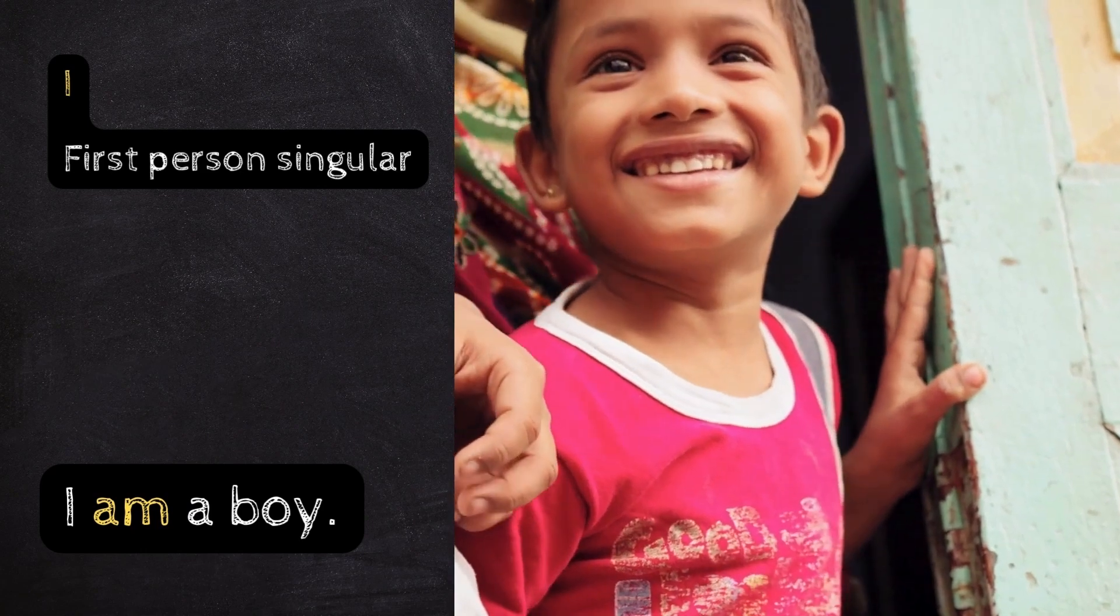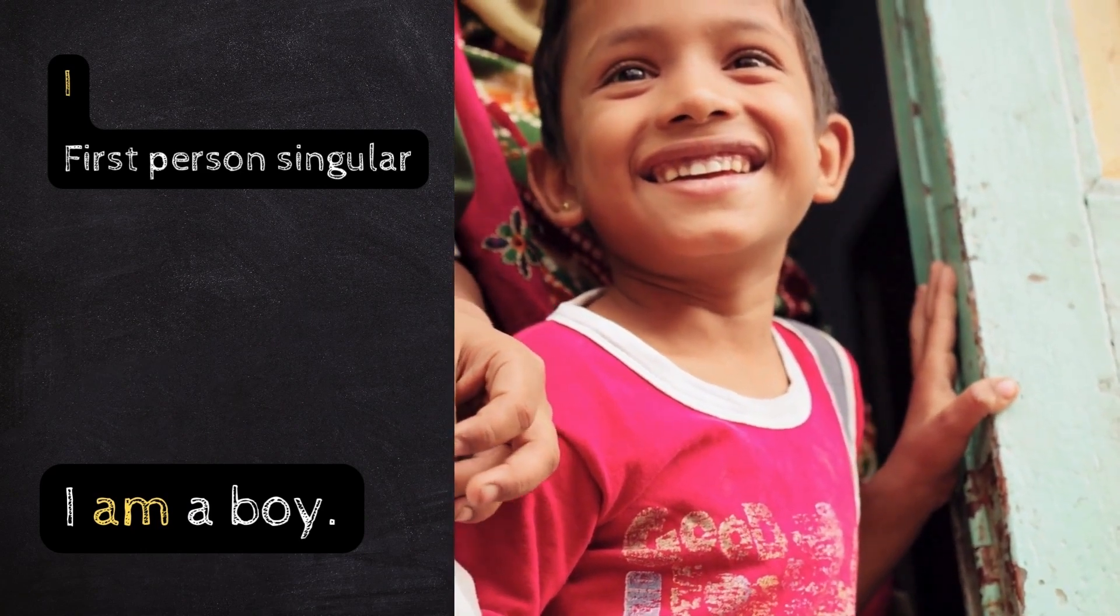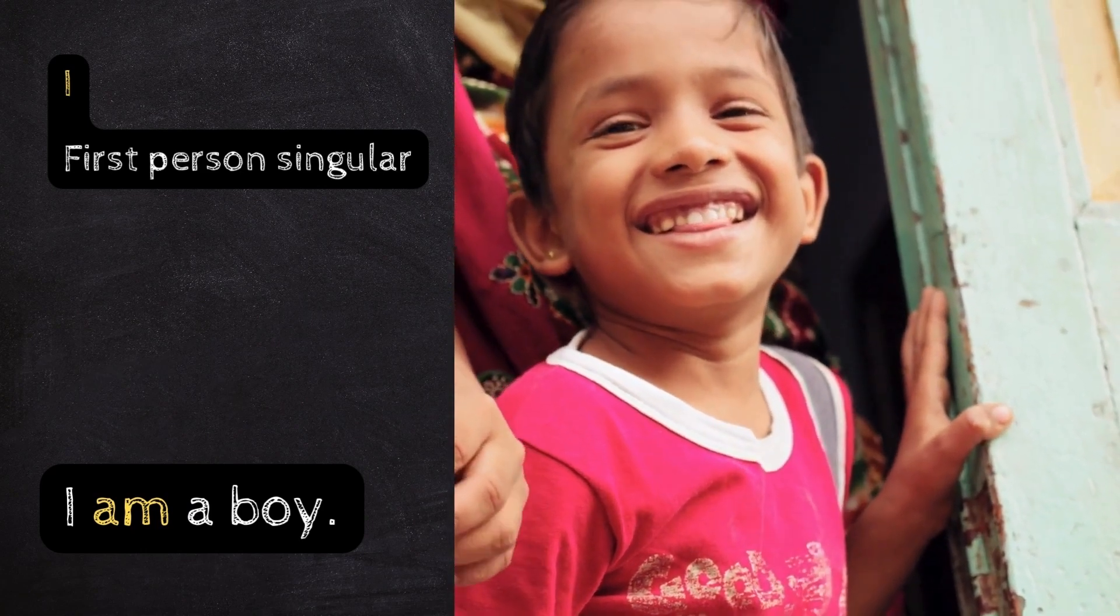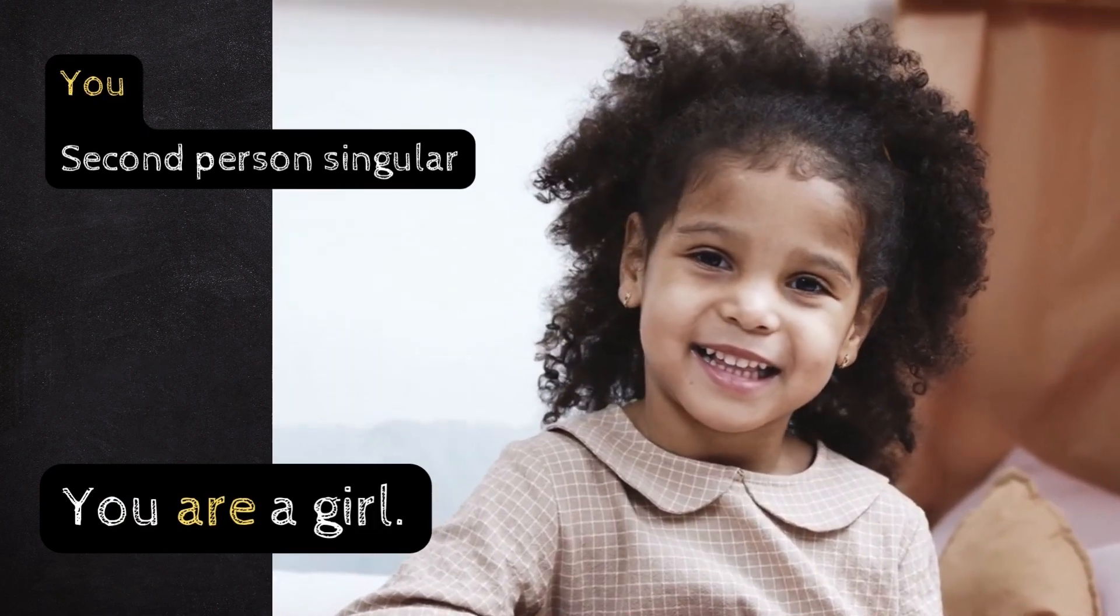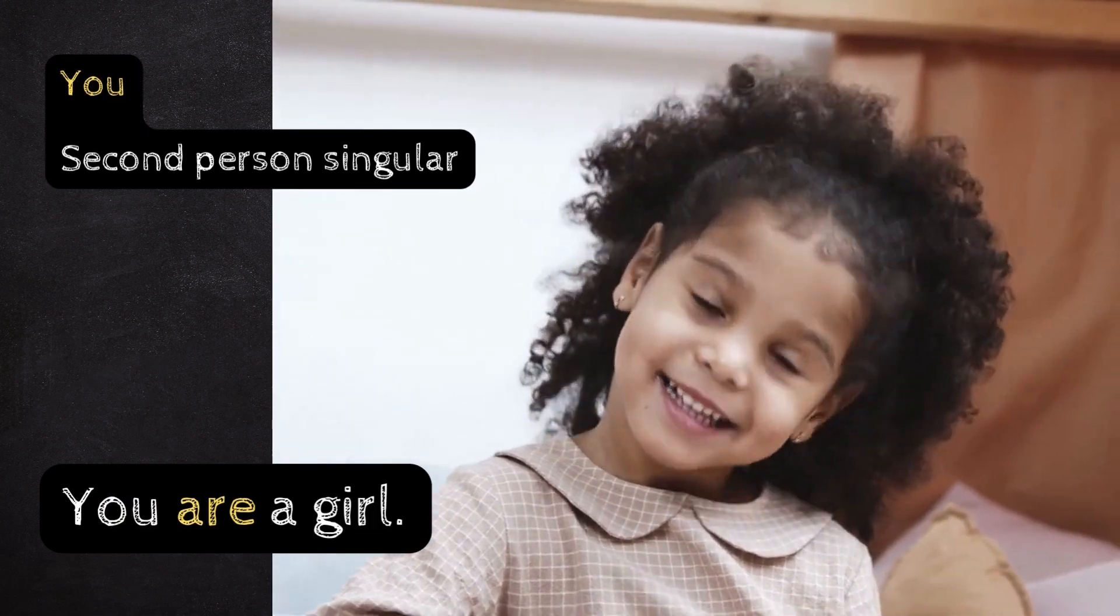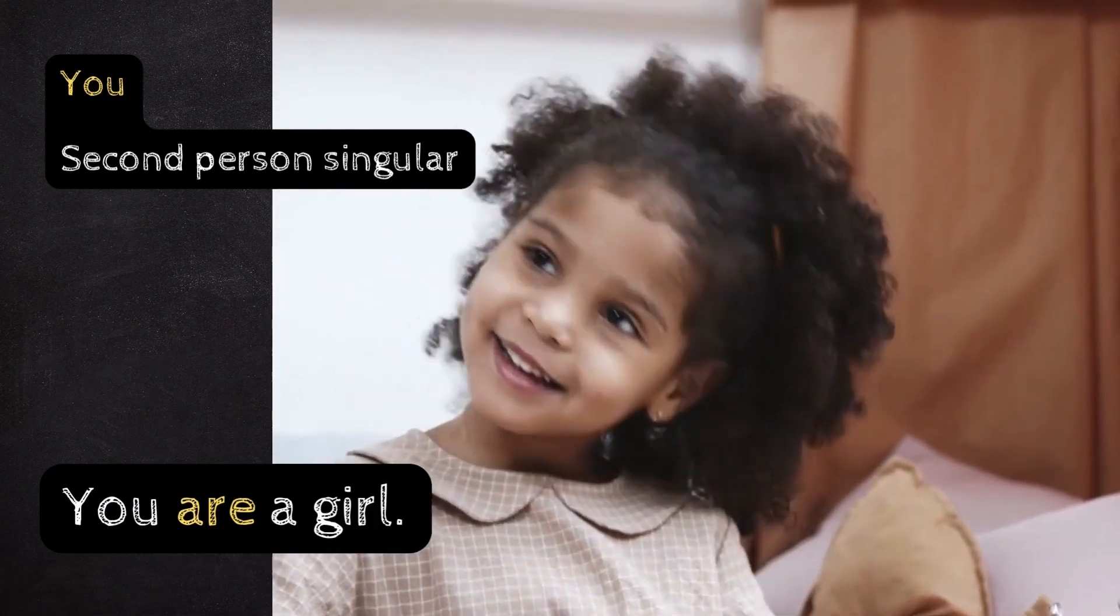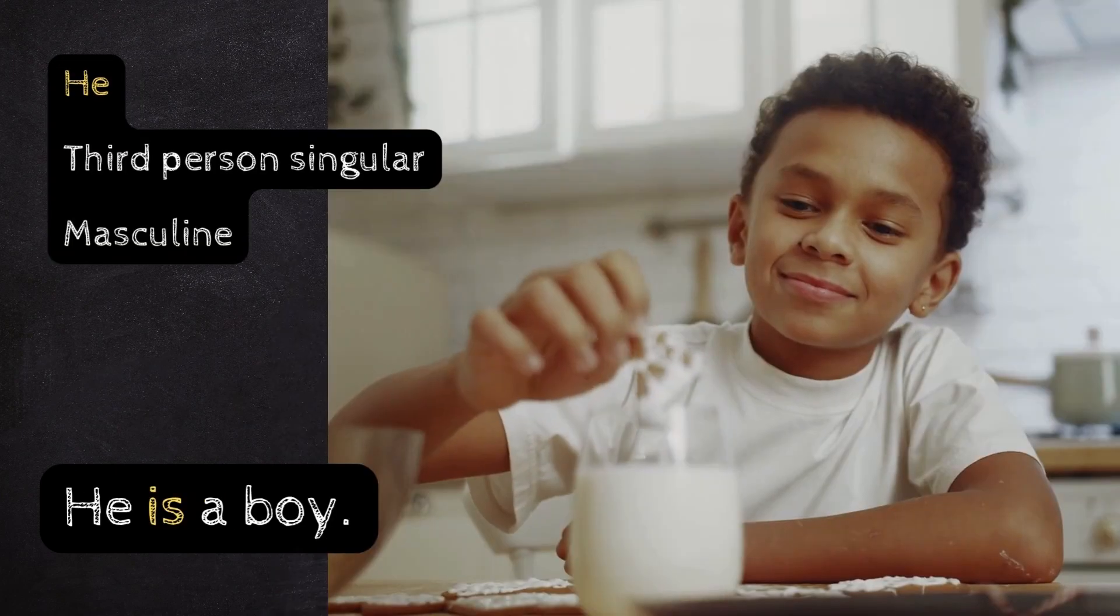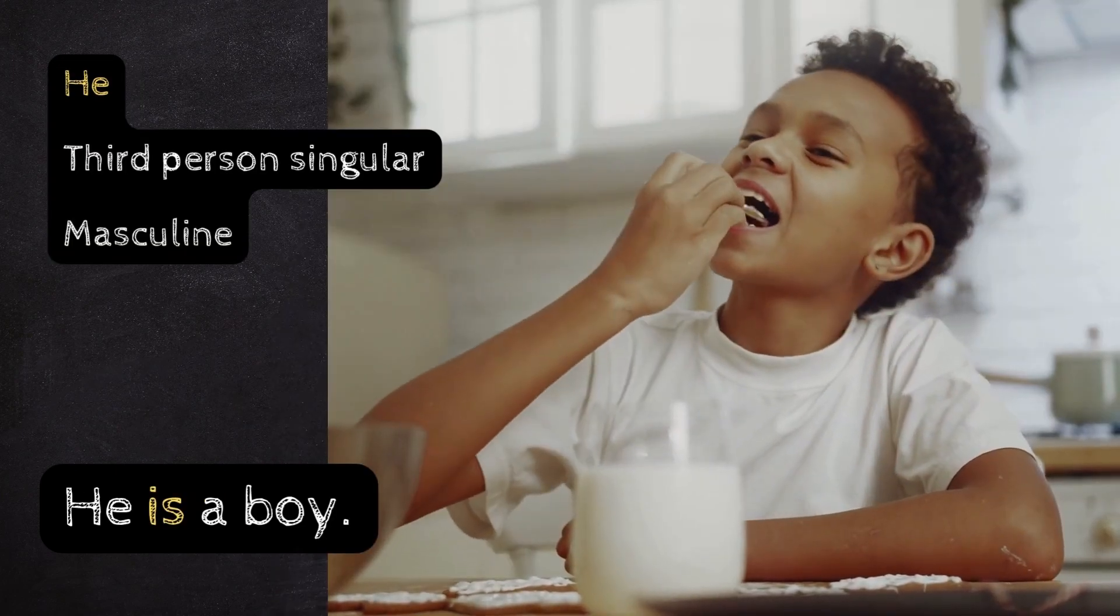I - First Person. I am a boy. You - Second Person Singular. You are a girl.